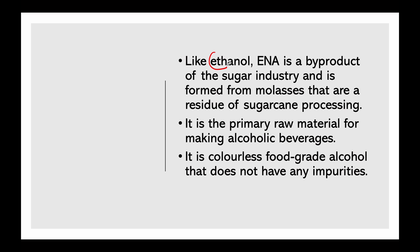What is Extra Neutral Alcohol? Just like ethanol, it is a byproduct of the sugar industry. It is also made from molasses — the residue of sugarcane processing — which is agricultural ethanol. It is the primary raw material for making alcoholic beverages. If it is pure, it has no impurities; it is a colorless, food-grade alcohol with a neutral smell and taste.